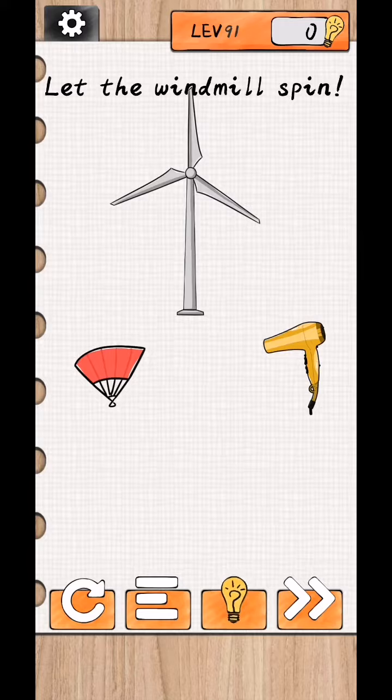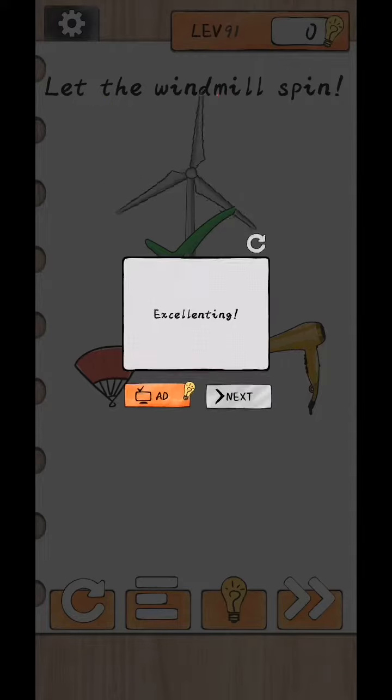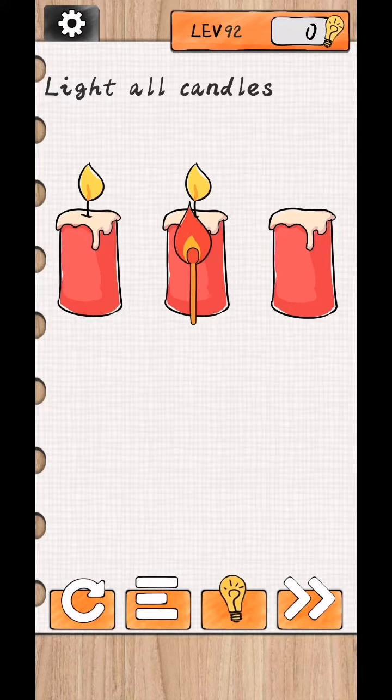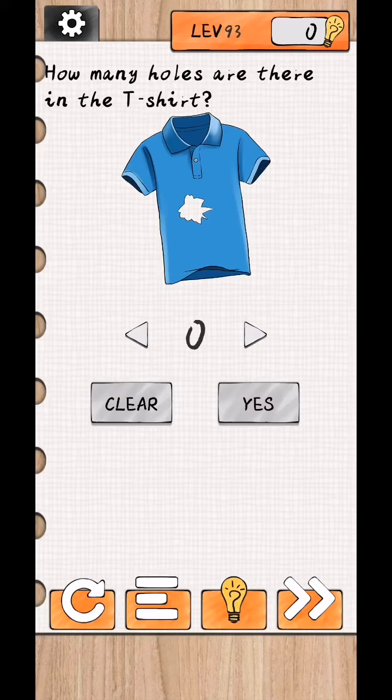Brain Surfing levels 91 to 95. Level 91: Let the windmill spin. Shake your phone and level complete. Level 92: Light up all candles. Light them up and move this candle out of the screen and level complete.